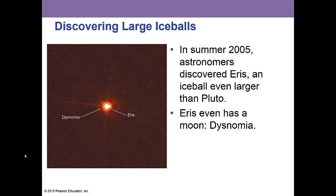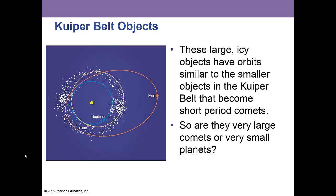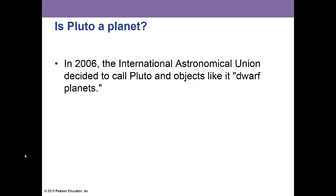In the summer of 2005, astronomers discovered Eris, an ice ball even larger than Pluto, which even has a moon named Dysnomia. There are many icy objects like Pluto on elliptical inclined orbits beyond Neptune, and the largest are comparable in size to Earth's Moon. In a controversial move in 2006, the International Astronomical Union decided to call Pluto and objects like it dwarf planets.